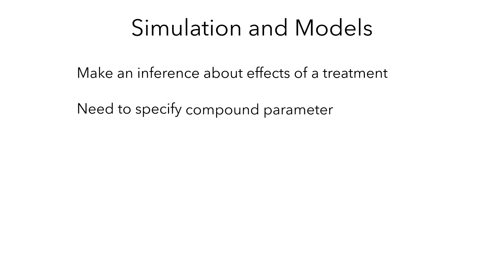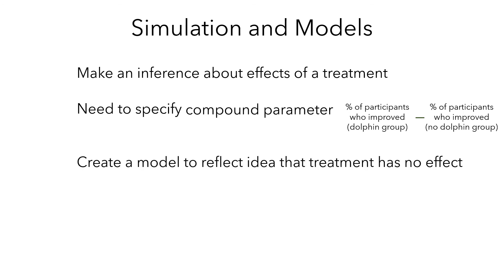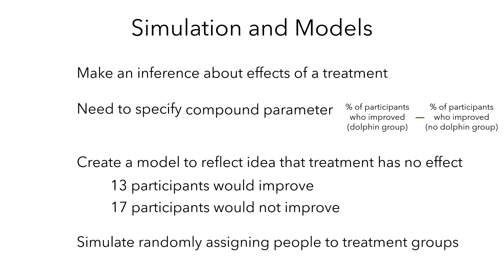Now let's recap what we've done here. Our goal was to make an inference about a population parameter. To do this, we needed to specify a compound parameter. In this case, the difference between the percentage of each group that saw improvement in their level of depression. Then we created a model to reflect the idea that the treatment had no effect. Specifically, that out of the 30 participants, 13 of them would improve and 17 would not improve, regardless of which treatment they were assigned to.